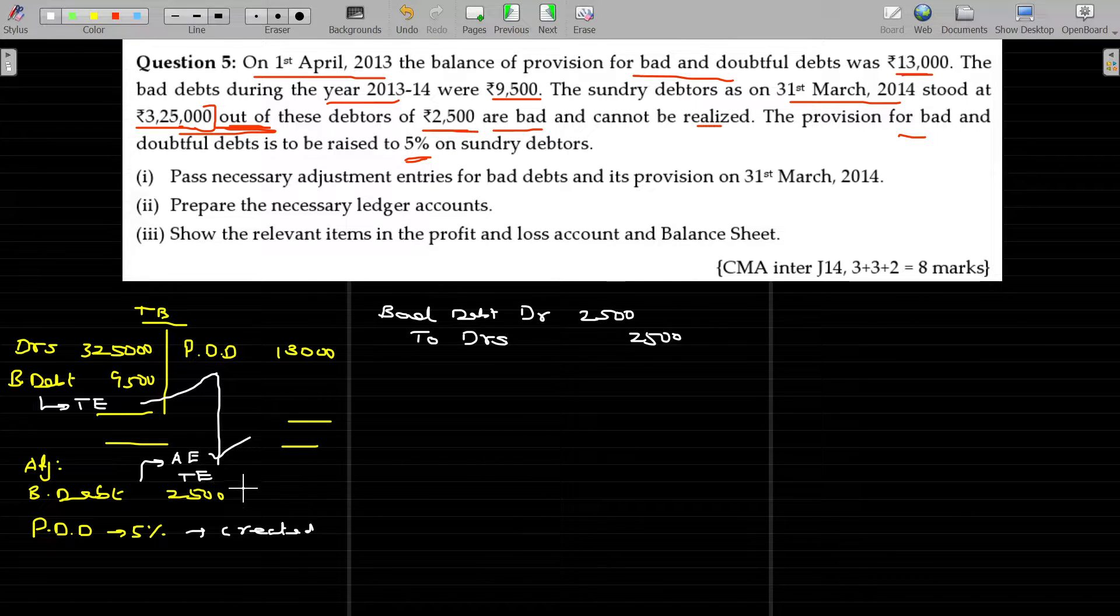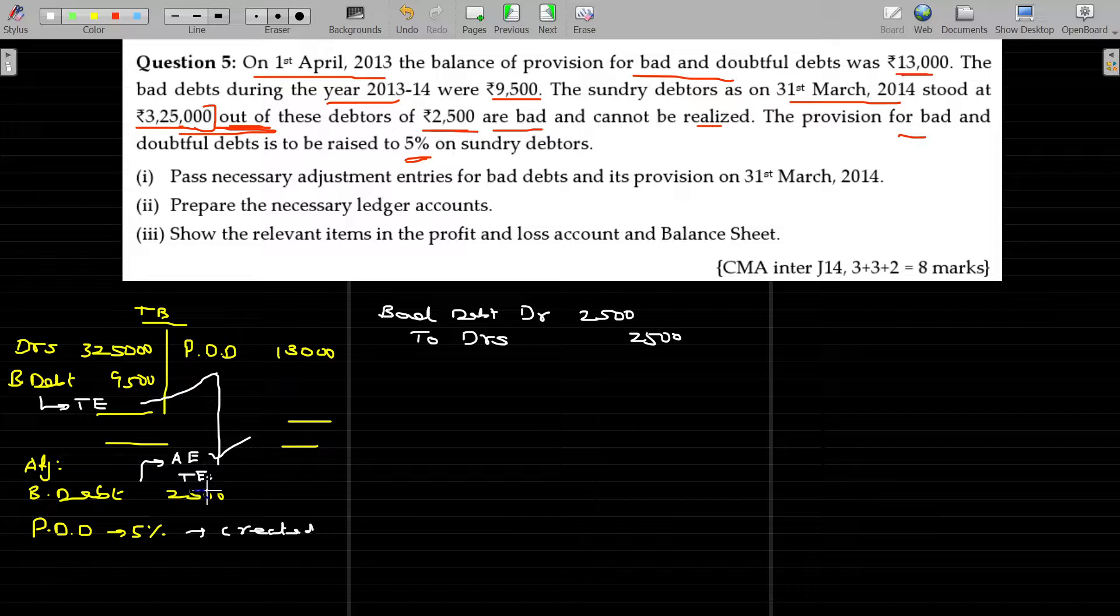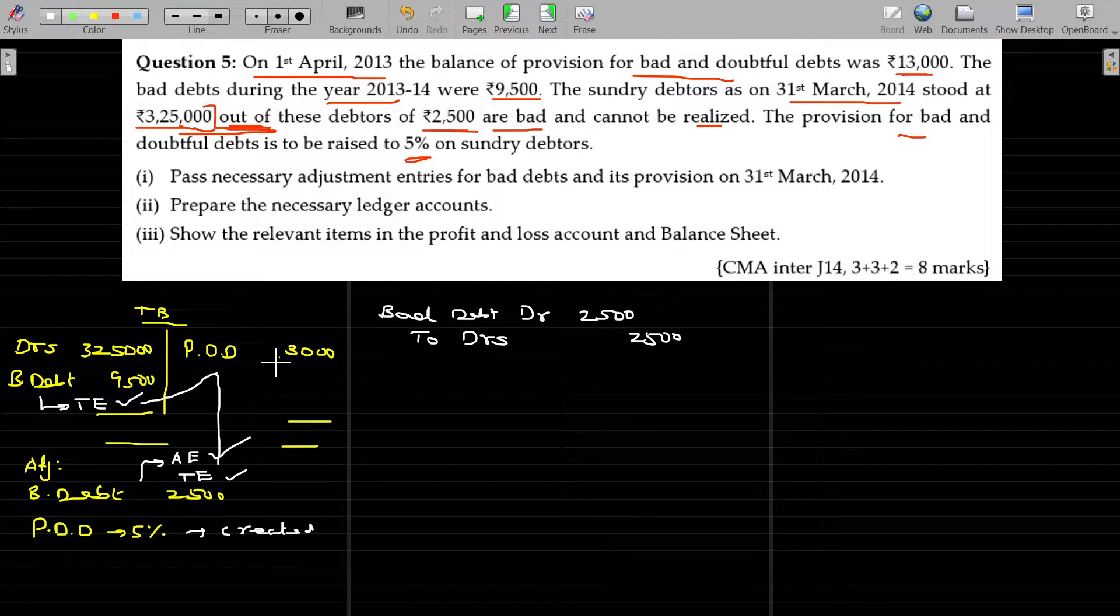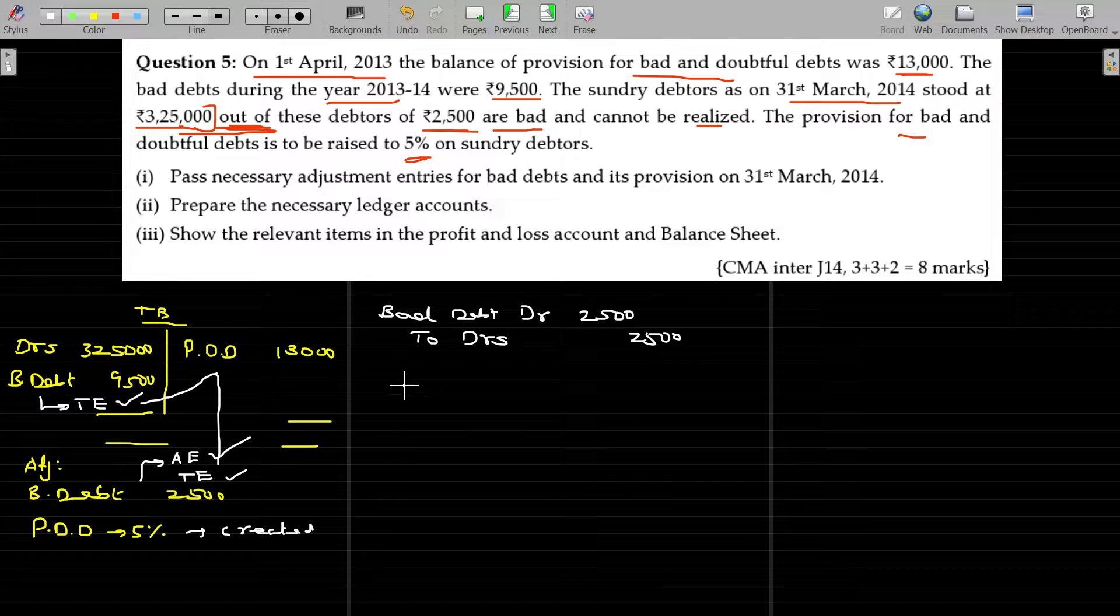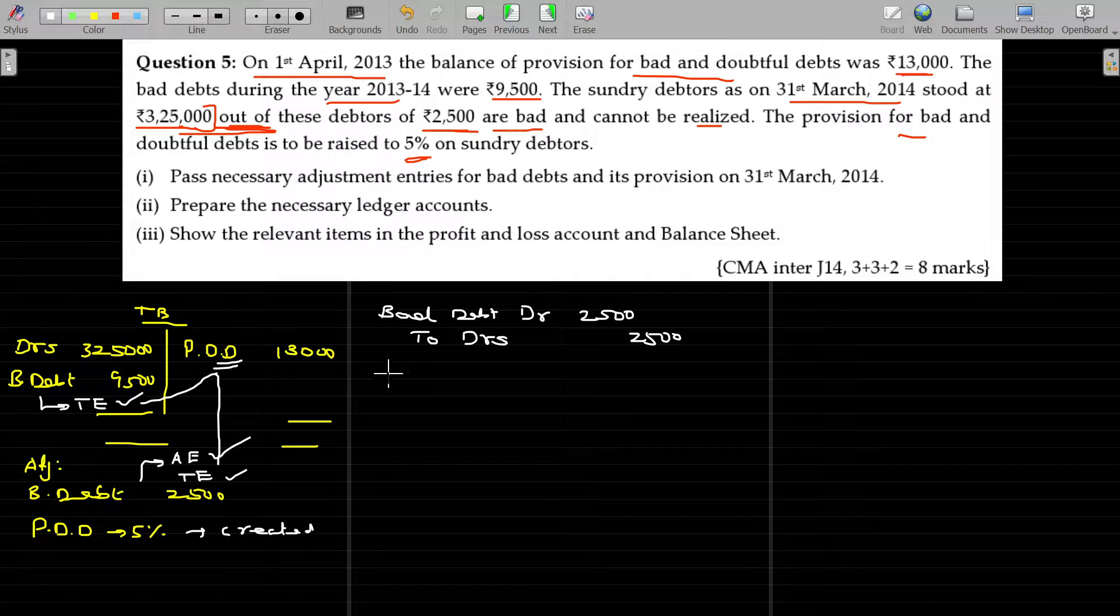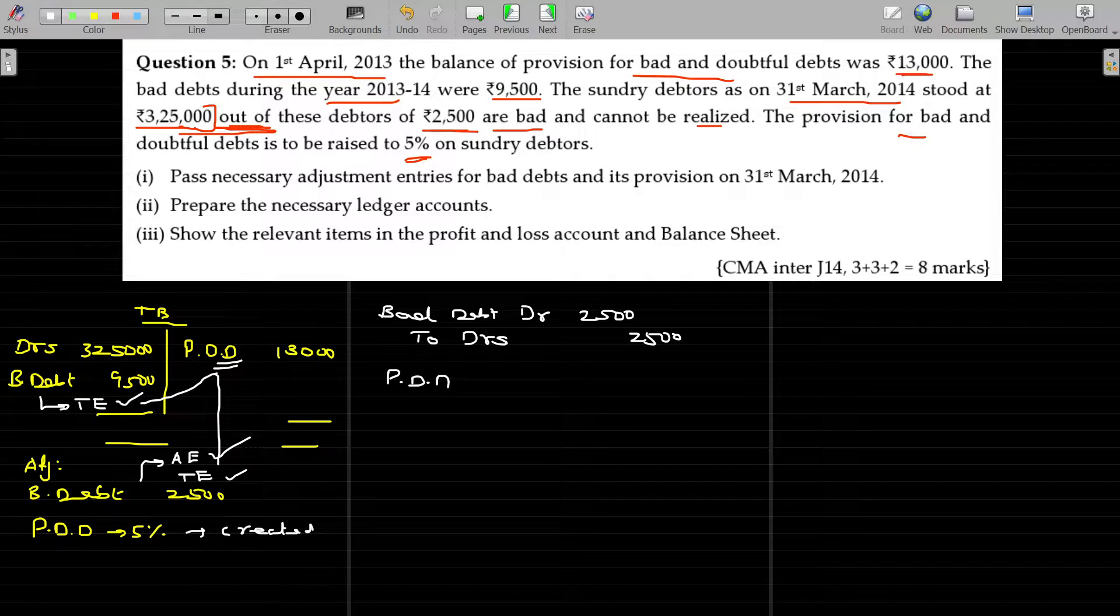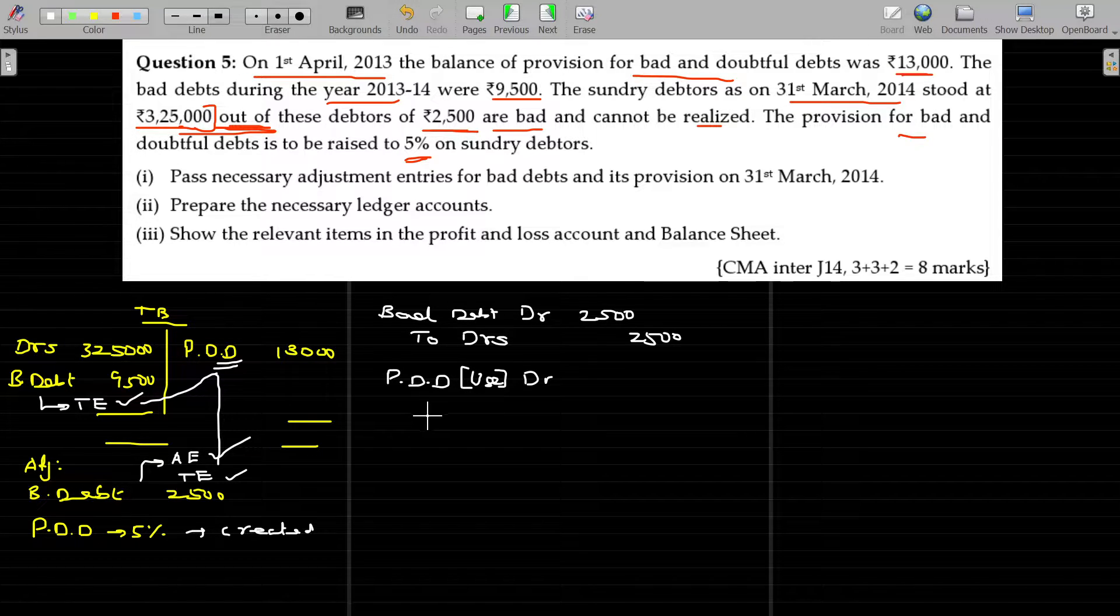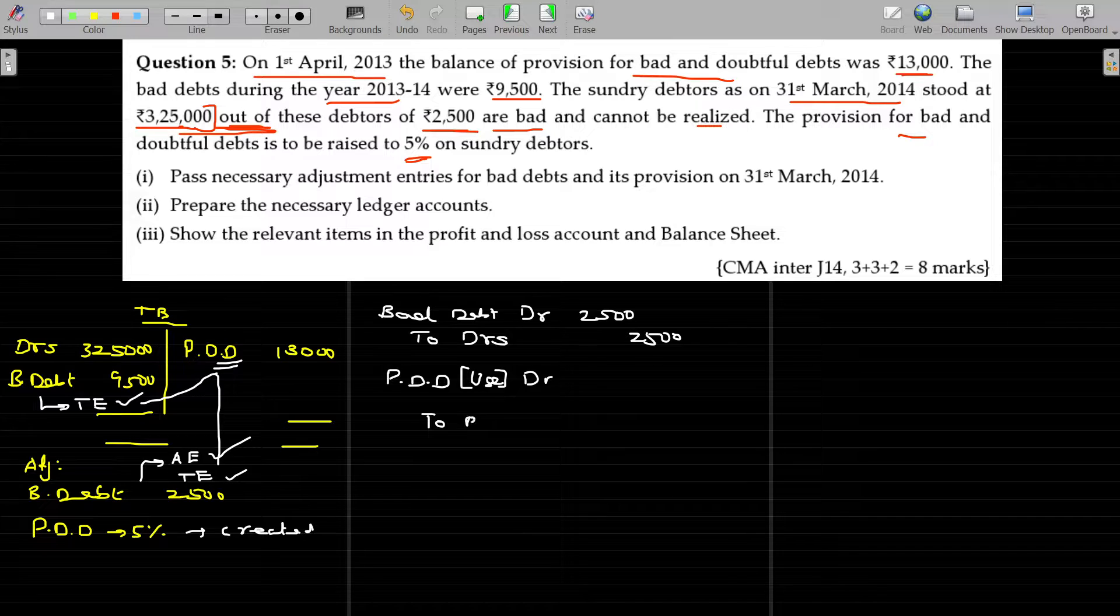Second entry is all about transfer entry. While transferring, we have two items here to be transferable. So I am clubbing these two. That will be routed through PDD only. So while using the PDD, I am going to debit it. So PDD account debit. Means usage or use. To bad debt, to bad debt.